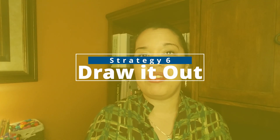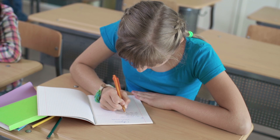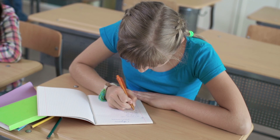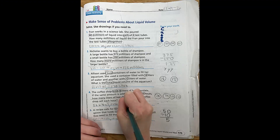Drawing out a math problem is a wonderful skill to have your students do, whether they're newcomers, beginners, or students at advanced levels of English proficiency. What's really nice is that they're taking what they're reading on paper and translating it into a comprehensible concept they can apply to solve the problem. It gets them to think in a mathematical way, and it's a great fallback strategy when mental math or other strategies are not working for them.